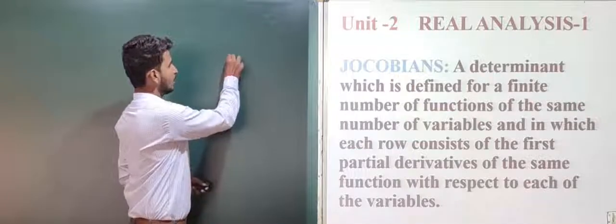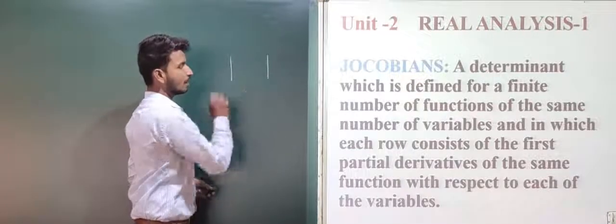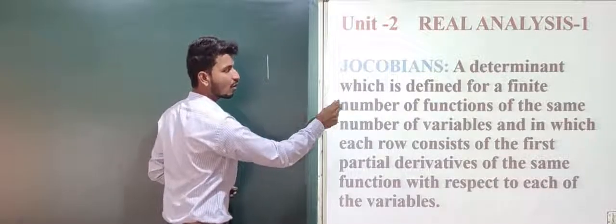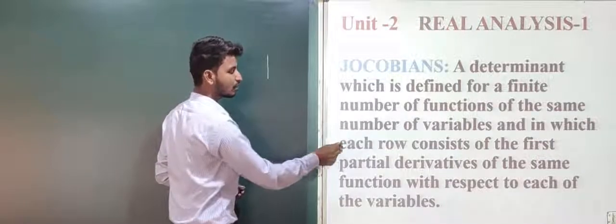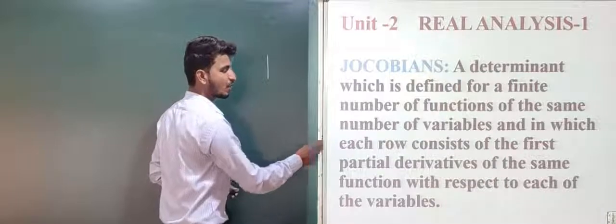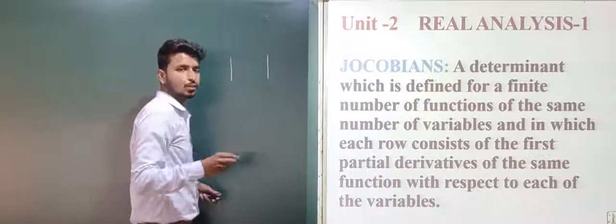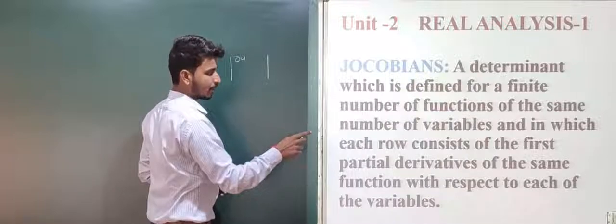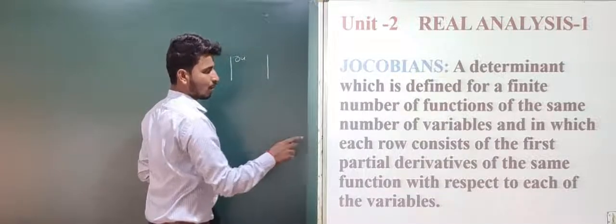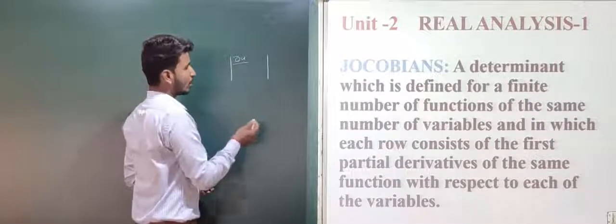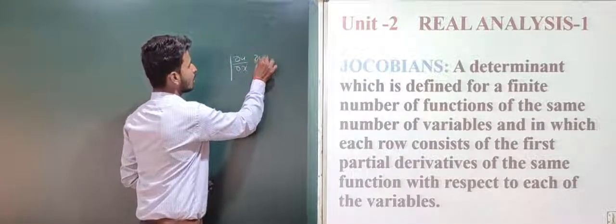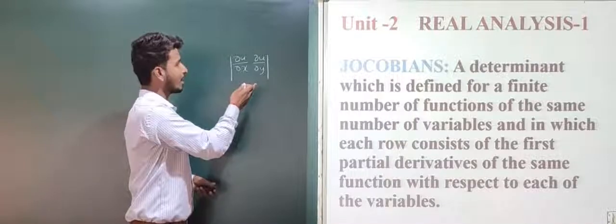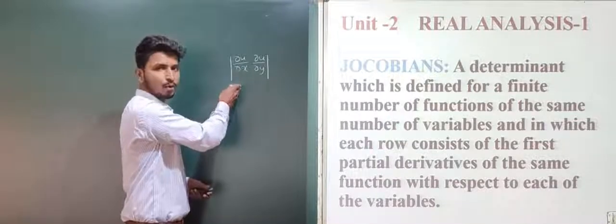The Jacobian is a determinant consisting of a finite number of functions of the same number of variables, where each row consists of the first partial derivatives of the same function. For example, if we consider a function u, the first partial derivatives with respect to the variables are ∂u/∂x and ∂u/∂y.